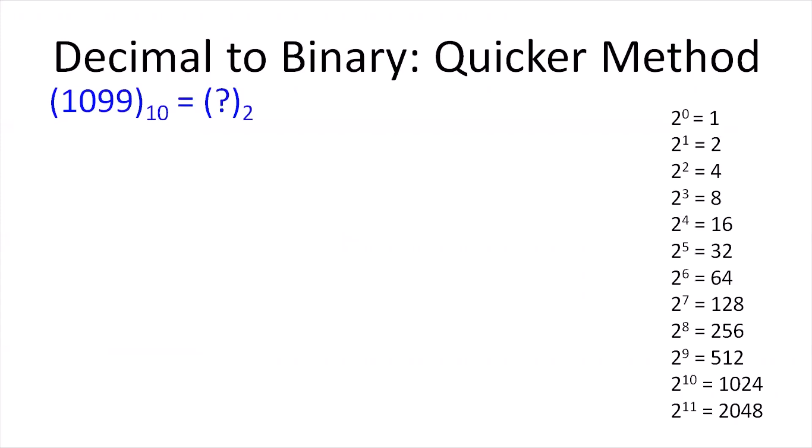To do so, we will first identify the highest power of 2 which is less than 1099. As shown, the highest power of 2 which is less than 1099 is 1024. So we split 1099 as 1024 plus 75.